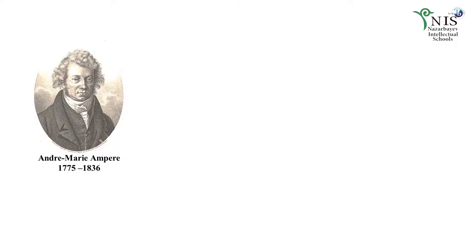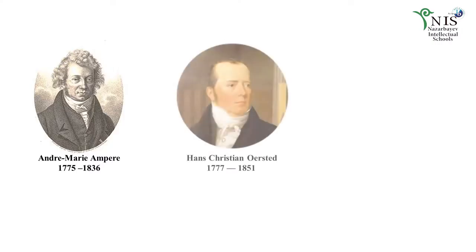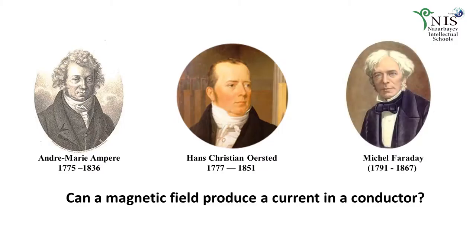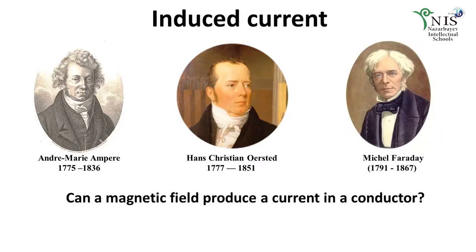The magnetic effect of electric current has been observed in many experiments performed by Ampere and Orsted. The question of whether a current could be generated or induced using a magnetic field was answered in the 19th century by Michael Faraday. There are a number of ways to generate electric current by means of a magnetic field.